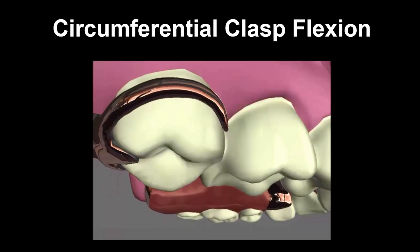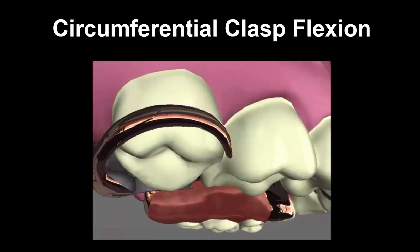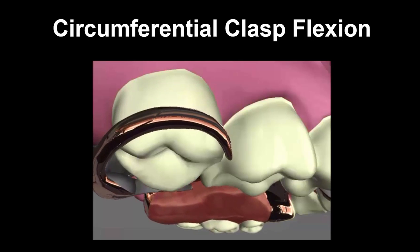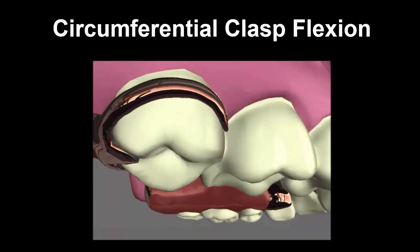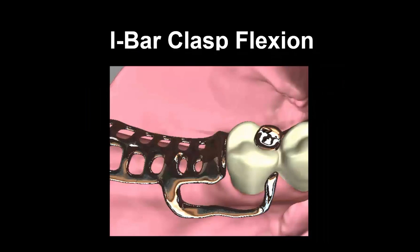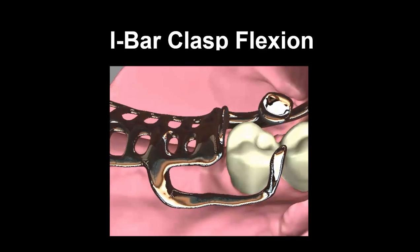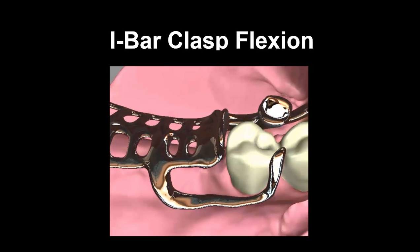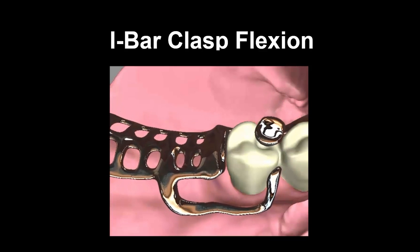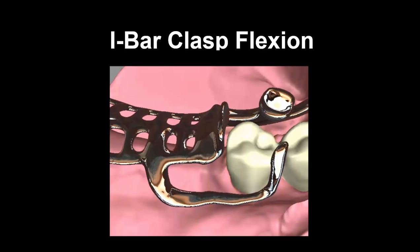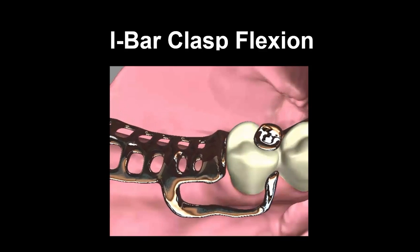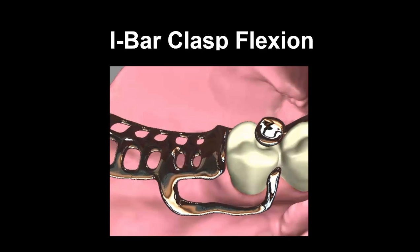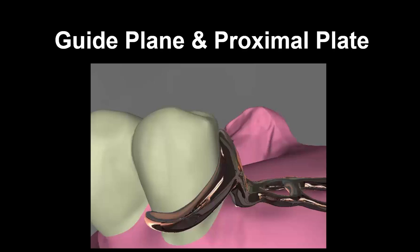For instance, you can see a circumferential clasp flexing over the surface of a tooth. You can see an eye bar clasp flexing over the contour of the tooth and into its undercut on the mesiofacial aspect of the tooth.